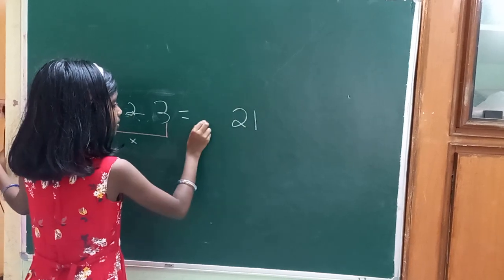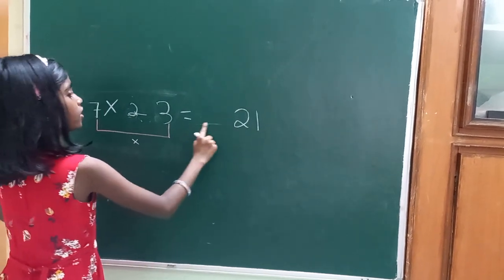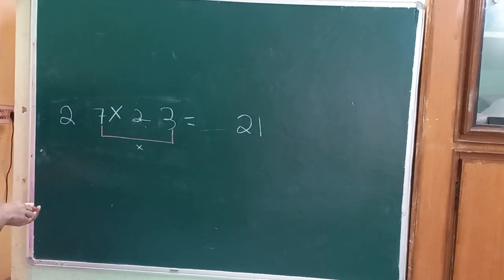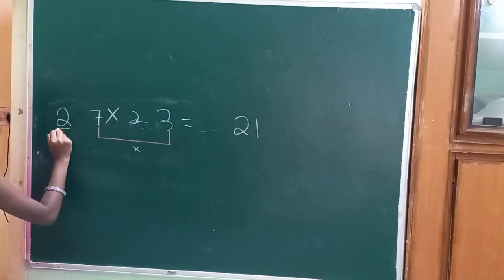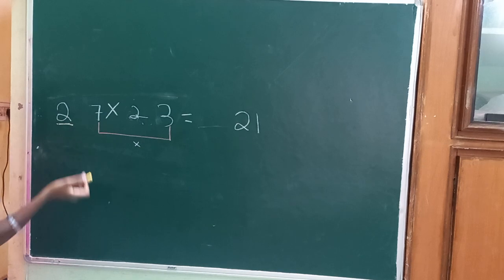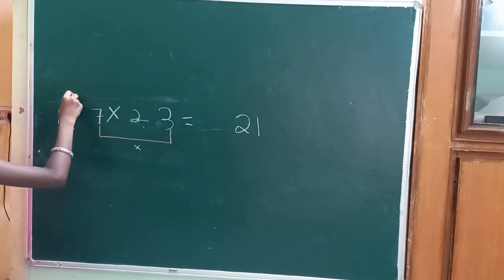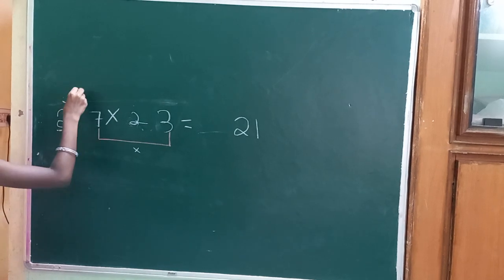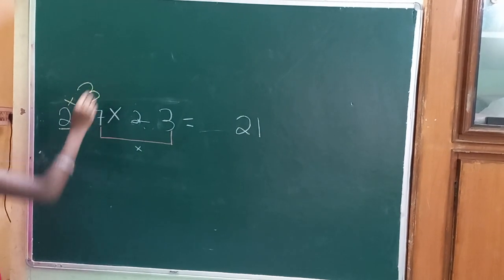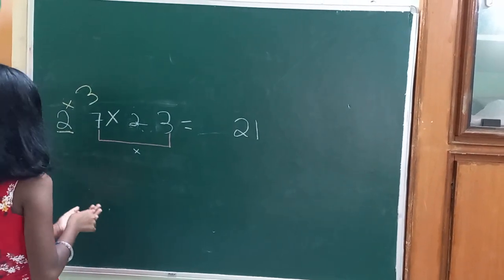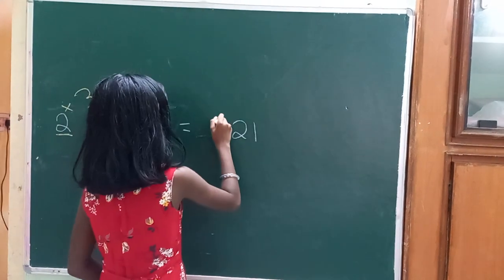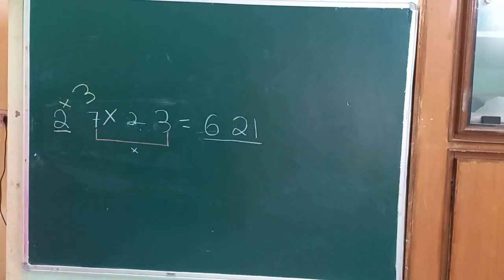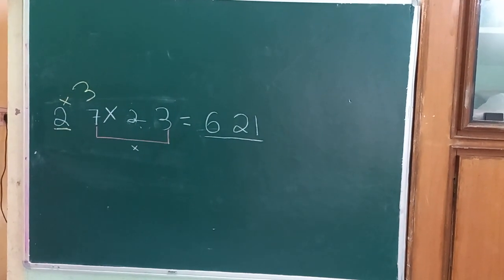Leave a little bit of gap here. This is going to be our second part of the answer. Now, what you're going to do is multiply this number by the next number, which is two plus one equals three. So two multiplied by three equals six. The answer for this question, 27 multiplied by 23, will be 621.